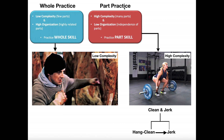In contrast, part practice is done when you have a skill that has high complexity, meaning it has multiple parts. Having multiple parts means lower organization — you can basically isolate different parts of the motor task and do them independently of one another. Going back to the five-act play example, you could run through the whole thing, but you could choose to practice just act two or act four. You don't have to practice the entire program all at once. The key is you have to have at least two parts that you can isolate from one another.